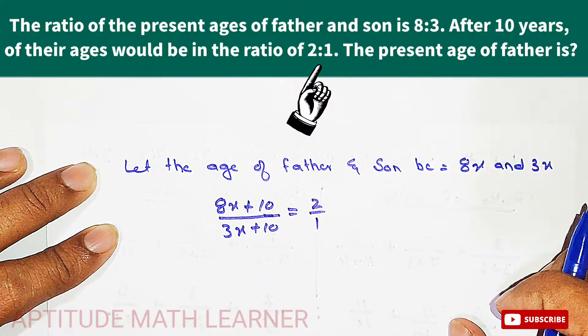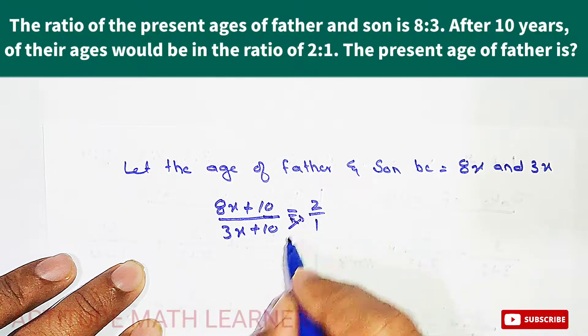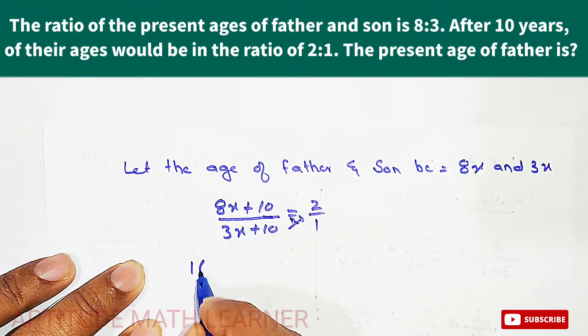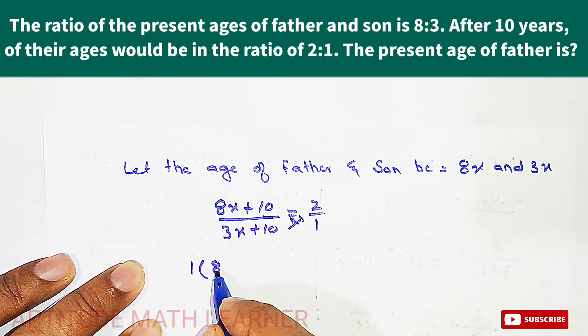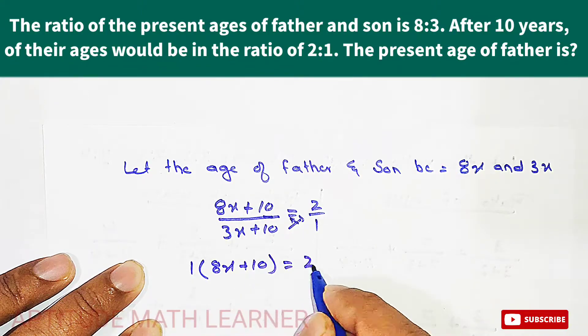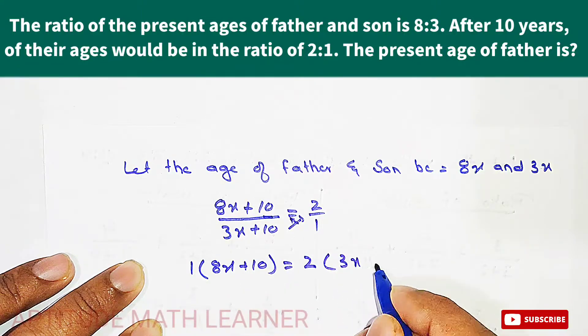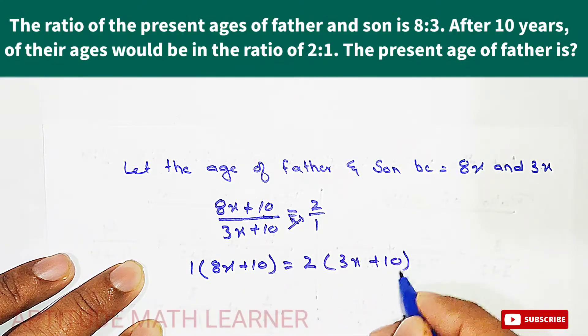After having this, we cross multiply it. So this becomes 1 multiplied by 8x plus 10 is equal to 2, and this portion goes upward. This becomes 3x plus 10.